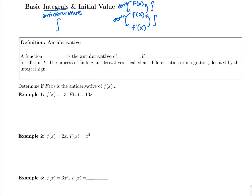With this definition, we have a function, and the antiderivative is called capital F of X — it's the antiderivative of lowercase f of X. This is true as long as we take the derivative of capital F of X and get back to lowercase f of X. Capital F is definitely the antiderivative if we take the derivative of it and we get back to the original function.